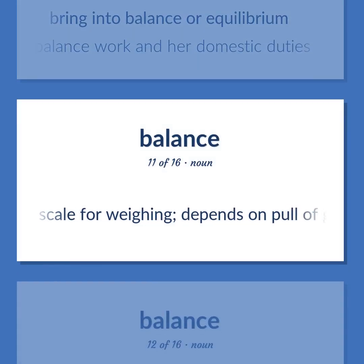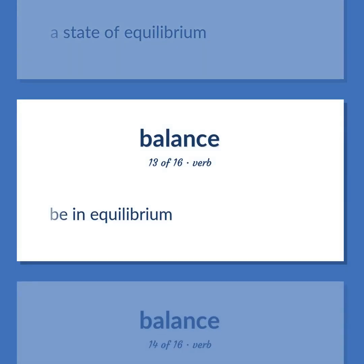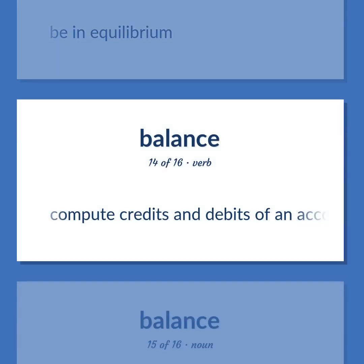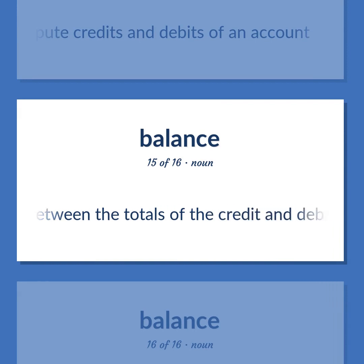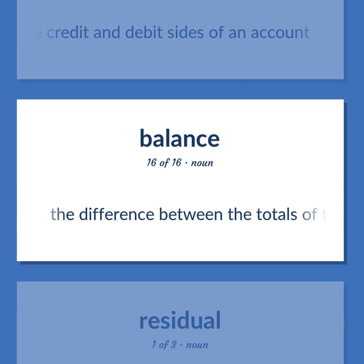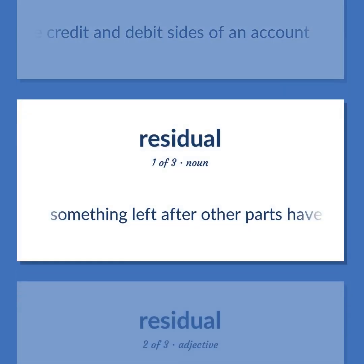A scale for weighing; depends on pull of gravity. A state of equilibrium. Be in equilibrium. Compute credits and debits of an account. Equality between the totals of the credit and debit sides of an account. The difference between the totals of the credit and debit sides of an account. Something left after other parts have been taken away.